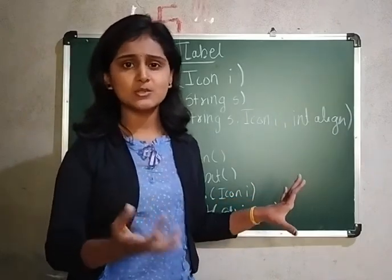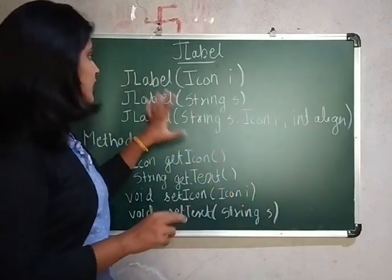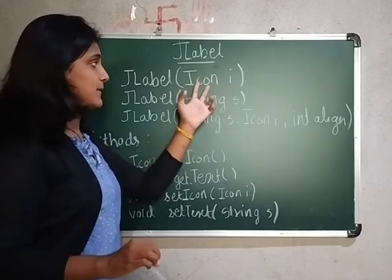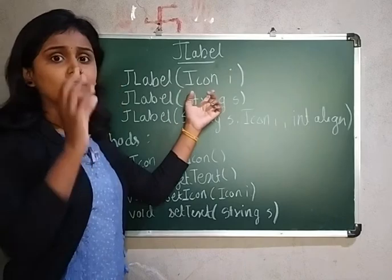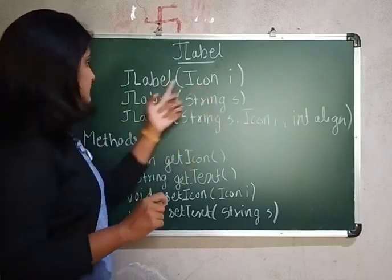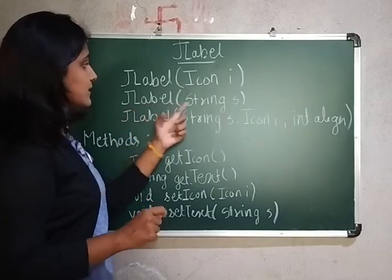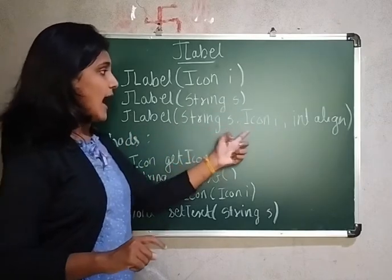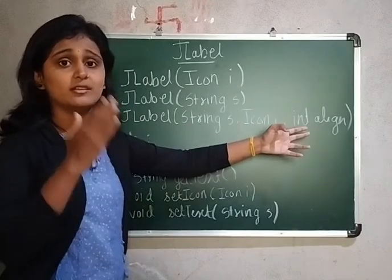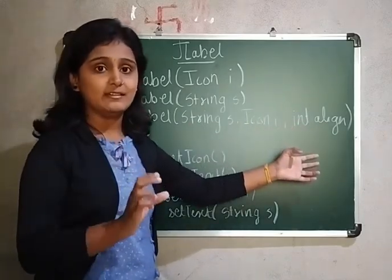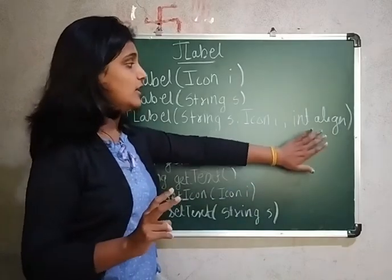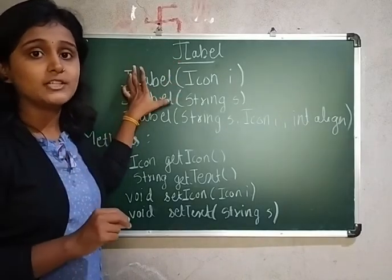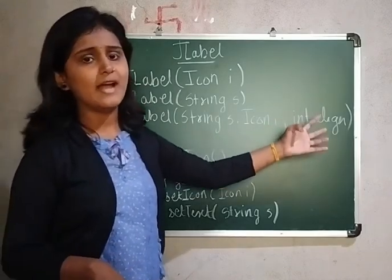Regarding JLabel, we will see the constructors and methods. On a JLabel you can add both text and images. The first constructor is JLabel(Icon) — if you want to add an image, you specify the image created using ImageIcon. The second constructor is JLabel(String) — if you want text, you specify the string. The third constructor is JLabel(String, Icon, int) — here you specify both text and image along with alignment, which can be left, right, center, leading, or trailing.